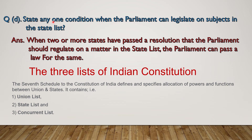Now the question is: state any one condition when the parliament can legislate on subjects in the state list. The answer is when two or more states have passed a resolution that the parliament should regulate on a matter in the state list, the parliament can pass a law for the same. For this, you need to understand about the lists of the Indian Constitution, because this topic is very important from an exam perspective.